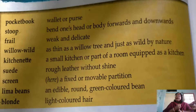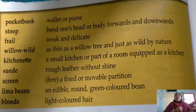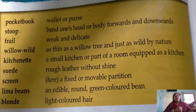Here are the meanings you should know. There are nine meanings. Number one: pocketbook, which is a wallet or a purse. Number two: stoop, which means to bend one's head or body forward and downward. Number three: frail, which is weak and delicate — when we are frail, we become weak and delicate. Number four: willow wild, meaning as thin as a willow tree.